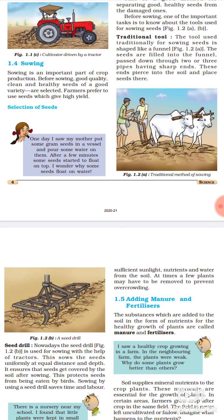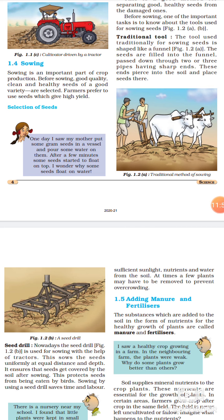Traditional tool - the tool used traditionally for sowing seeds is shaped like a funnel. Traditional matlab pehle ke, jaise hum pehle use karte the, jo bhi instruments ya jo bhi equipment seed sow karne ke liye - woh ek funnel ki jaisi dikhti thi. The seeds are filled into the funnel, passed down through one or three pipes having sharp ends. Toh pehle jab hum jo tools use karte the, usmein hum ek funnel lete the, aur uske neeche do ya teen pipes hote the, jinke ends sharp hote the.